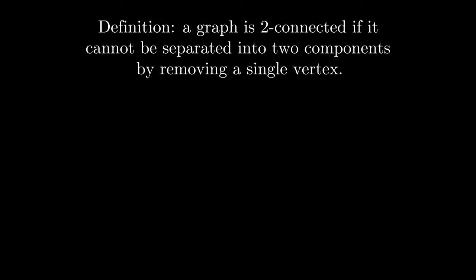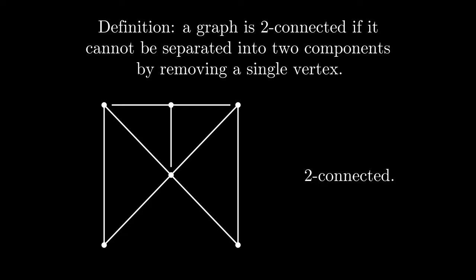We are now going to discuss two-connected graphs. We define a graph to be two-connected if it cannot be separated into two components by removing a single vertex, so this is an example of a two-connected graph.